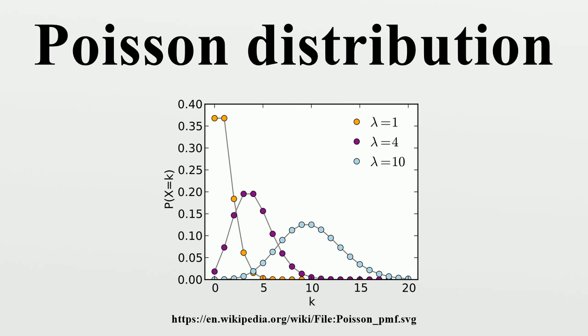The Poisson distribution arises in connection with Poisson processes. It applies to various phenomena of discrete properties whenever the probability of the phenomenon happening is constant in time or space. Examples of events that may be modeled as a Poisson distribution include the number of soldiers killed by horse kicks each year in each corps in the Prussian cavalry. This example was made famous by a book of Ladislaus Bortkiewicz. The number of yeast cells used when brewing Guinness beer. This example was made famous by William Sealy Gosset. The number of phone calls arriving at a call center within a minute. This example was made famous by A.K. Erlang.